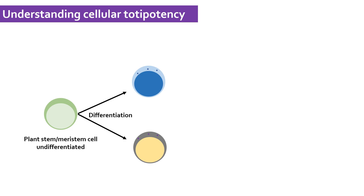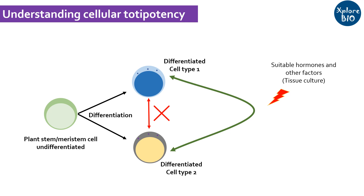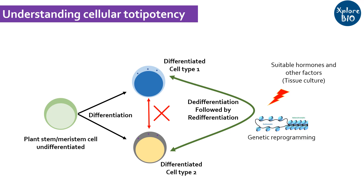However, under normal conditions, a differentiated cell specialized to a specific fate cannot give rise to another cell type. But if factors such as hormones are altered appropriately, a differentiated cell can undergo genetic reprogramming, become undifferentiated, and even redifferentiate to give rise to a different cell type with a different function.